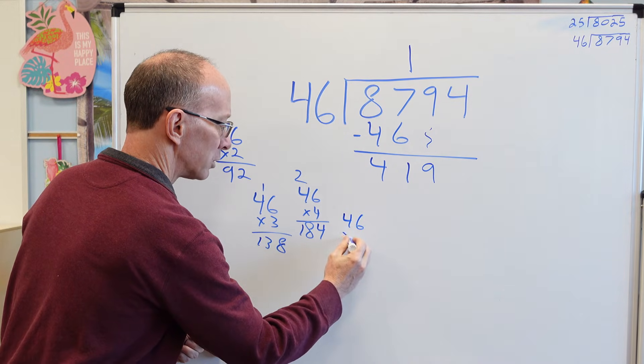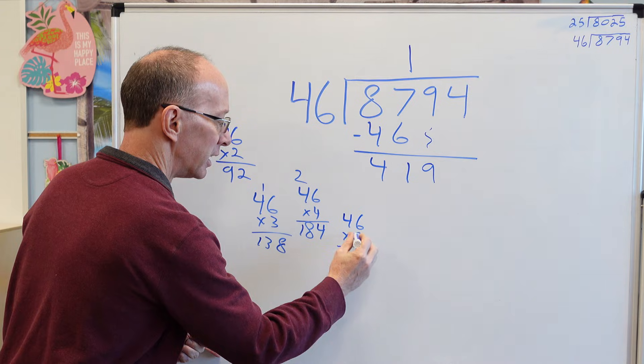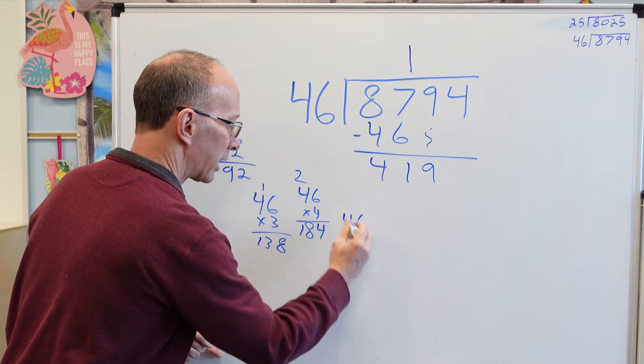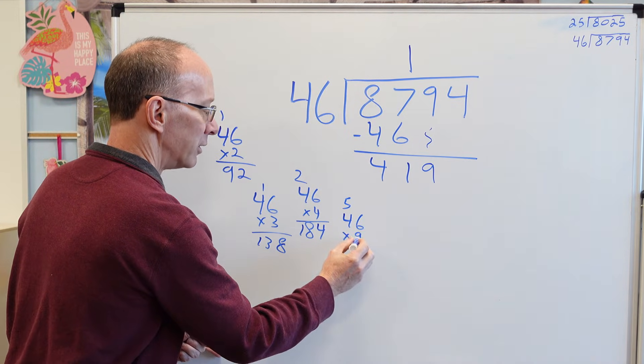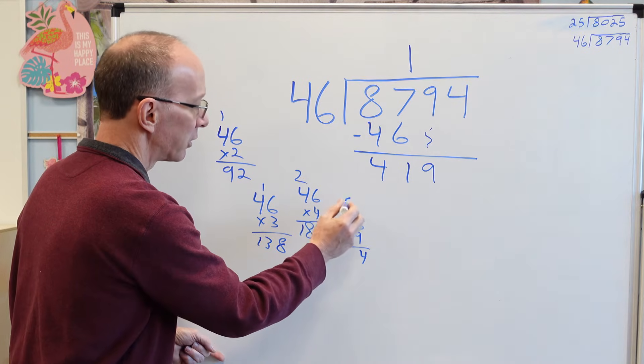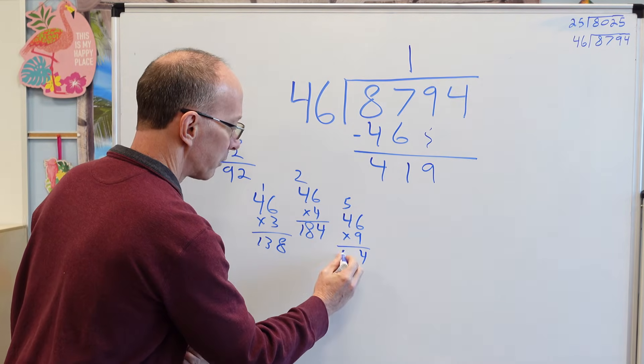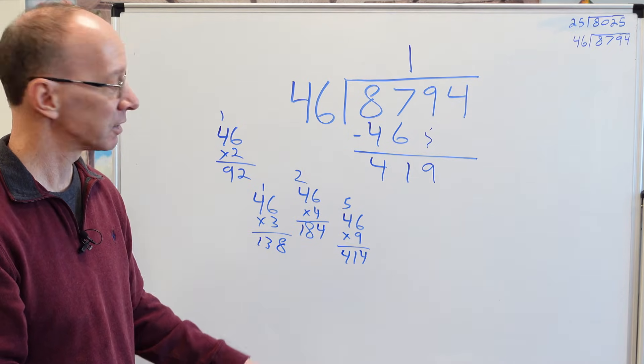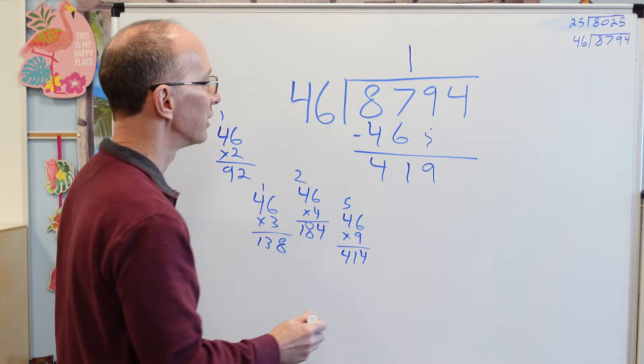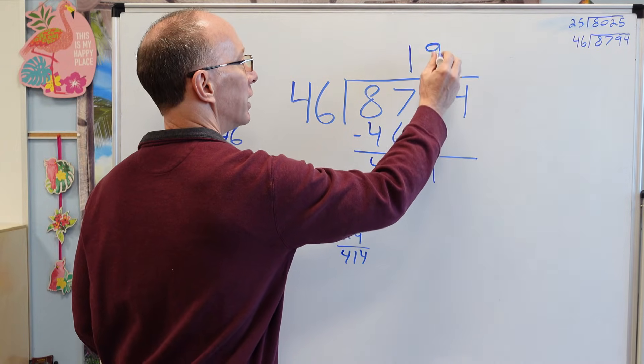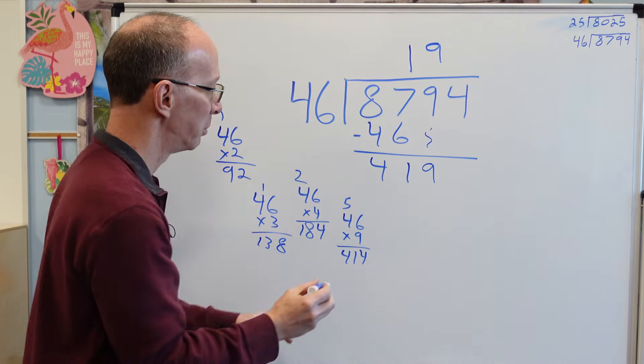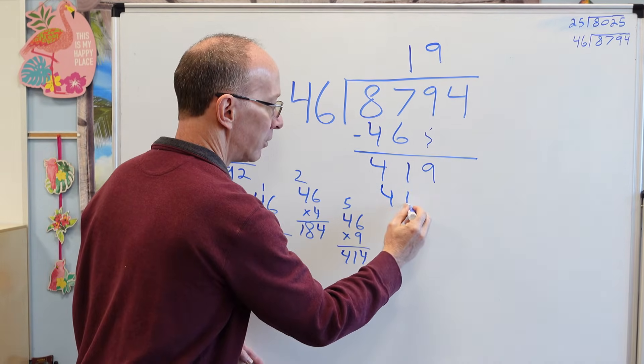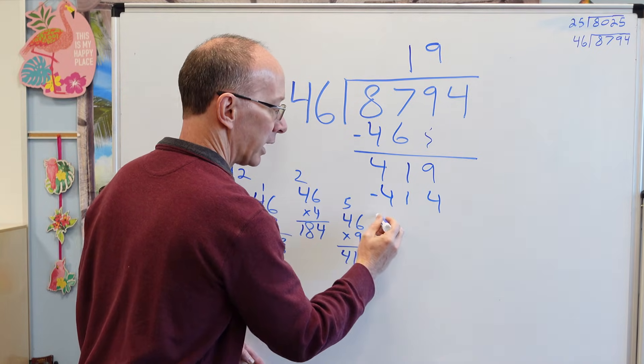I'm going to take 46 right here. And I'm going to multiply it by 9. So 9 times 6 would be 54. Carry the 5 up here. 9 times 4 is 36. 37, 38, 39, 40, 41. I think that's close enough. I think we hit it right there. So I'm going to put 9 right over here. 9 times 46 would be 414.